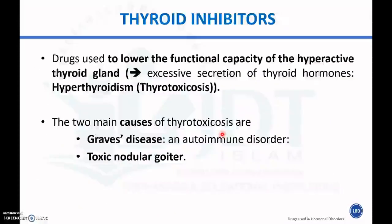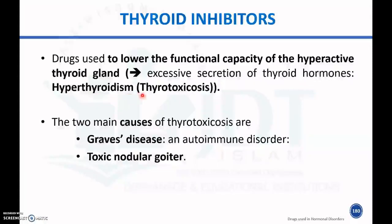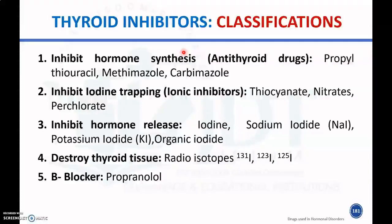In case of hyperthyroidism, if there is increased thyroid hormone in the body, thyroid inhibitors must be used. Thyroid inhibitors are drugs used to lower the capacity of a hyperactive thyroid gland. Excessive secretion of thyroid hormone leads to hyperthyroidism or thyrotoxicosis. The two main causes of thyrotoxicosis are Graves' disease, which is an autoimmune disorder, and toxic nodular goiter.